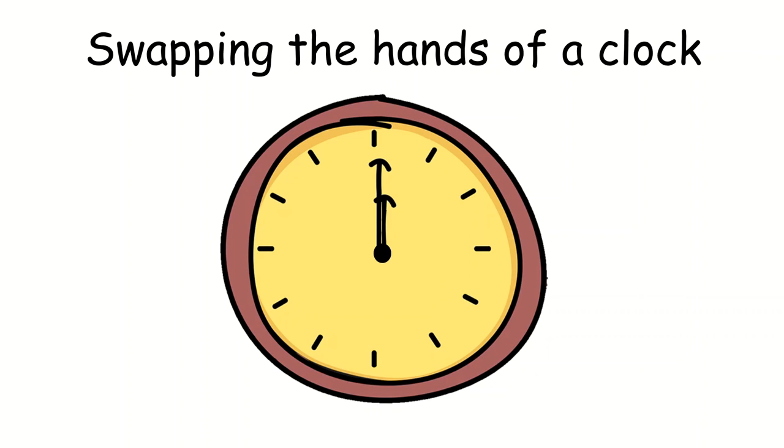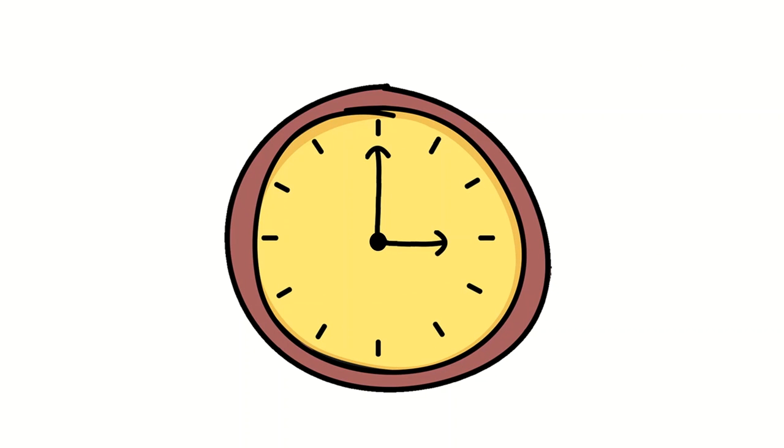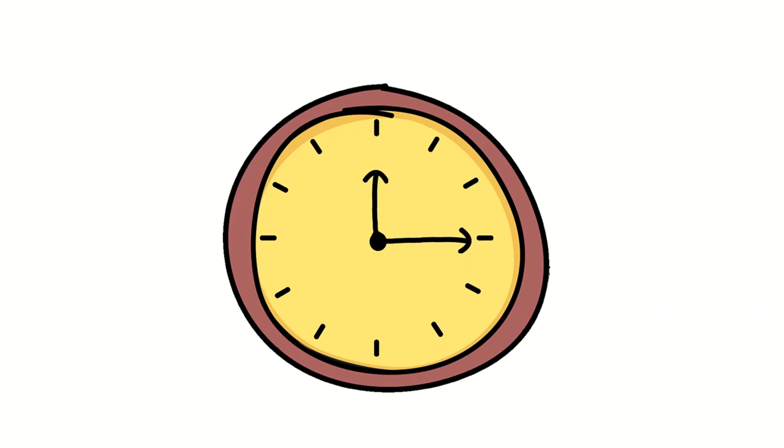Let's say you have a clock and it's 12 o'clock. If you swap the two hands of the clock, you still have a valid time. But if, for example, it's 3 o'clock, swapping the two hands doesn't make sense. It doesn't show a valid time.